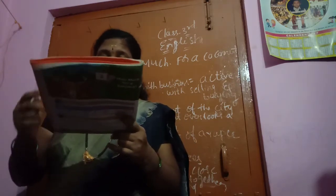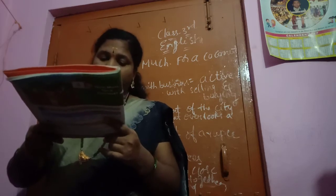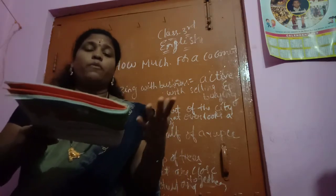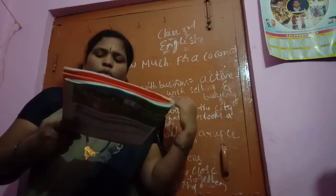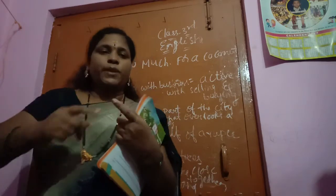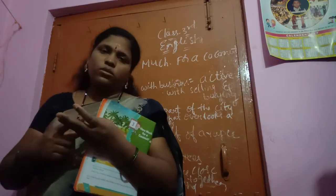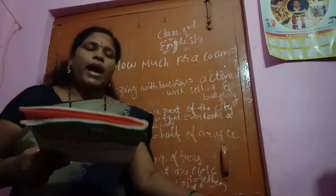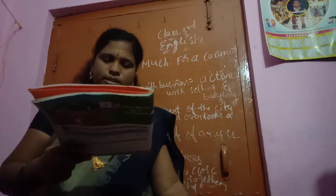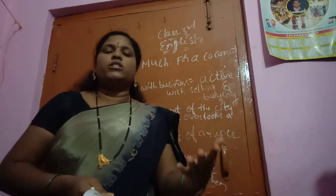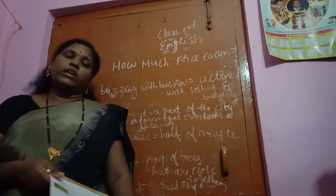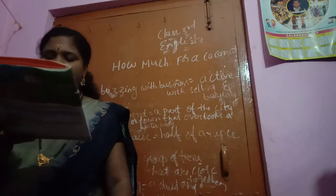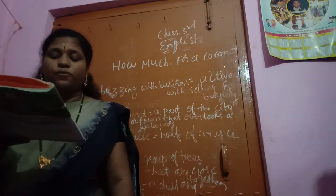It was hot and Bikkubai was tired when he reached the grove. A man was sitting nearby with a few coconuts left. Bikkubai asked, 'How much for a coconut?' The seller said, '50 paisa only.' Then Bikkubai said, 'I walked for such a long time and I am very tired — you should give it to me for free!' Said Bikkubai.